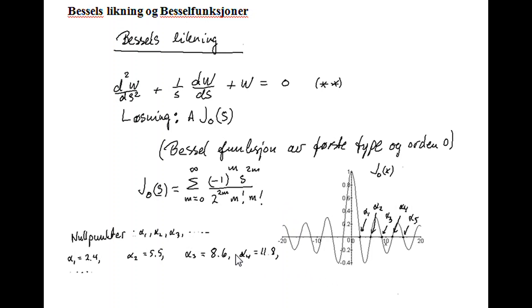In connection with the theory connected to vibration of circular membrane, we need the so-called Bessel equation, which takes the following form. We take the second derivative of the unknown variable w with respect to some variable s plus 1 over s multiplied with the derivative of w plus w, and this should be equal to 0.